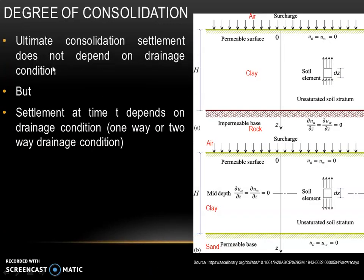Ultimate consolidation settlement does not depend on drainage condition, but settlement at time t depends on drainage condition — whether it is one-way or two-way drainage. Here we can see a clay layer between an impermeable base, which can be rock, and on top there is a permeable surface, which can be air or sand. Water has to travel for a length of h, so h becomes the total drainage path — this is referred to as one-way drainage condition.